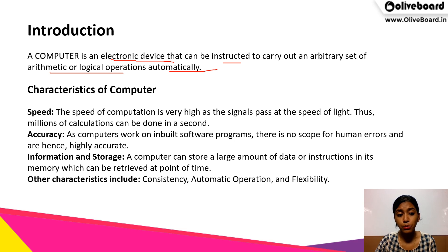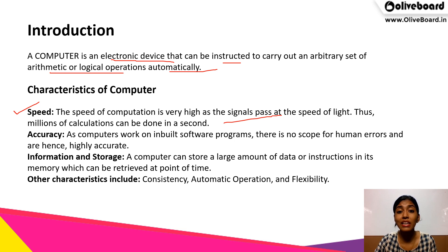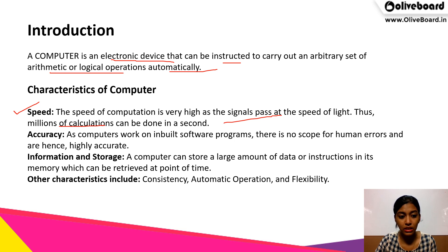The characteristics of computer: First, speed. The speed of computer is very high because in a computer the signal passes at the speed of light. Our mind takes time to calculate as humans, but when we talk about a computer its speed is very high. Therefore, millions of calculations can be done within a second.